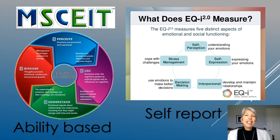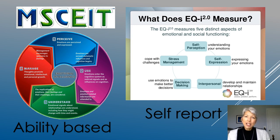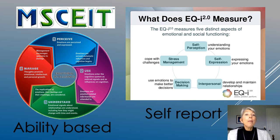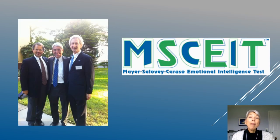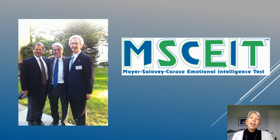The second difference is how EQ and EI are measured. It's common to measure EQ using what are called self-report tests. Self-report tests measure what someone thinks of their skills or their traits. It's interesting to know what people think of themselves, but that's very different from measuring their actual skills or abilities. EI, the ability model of EI, typically uses an ability-based approach to measurement. The MSCEIT, which stands for Mayer Salovey Caruso Emotional Intelligence Test, is one such assessment. After Jack and Peter introduced EI as an intelligence, they partnered with David Caruso and created an ability-based test that assesses each of the four areas of emotional intelligence.